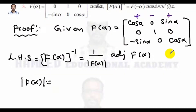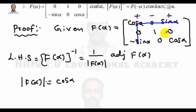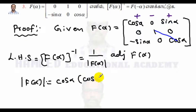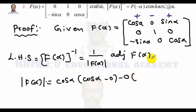To find the determinant, expanding along the first row: first element is cos α with default sign plus, so cos α times the minor — first row, first column removed — gives 1 times cos α minus 0, so cos α. Next element is 0 with default sign minus, so we write minus 0.